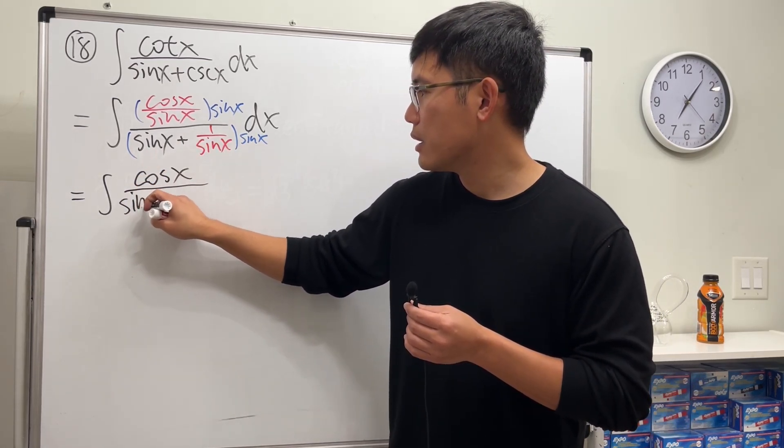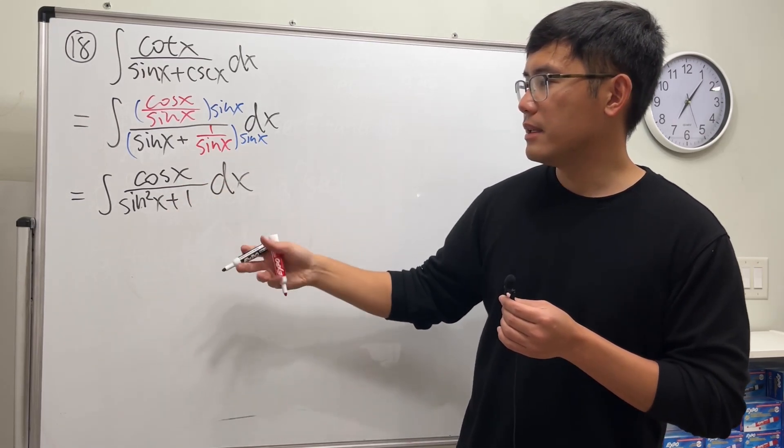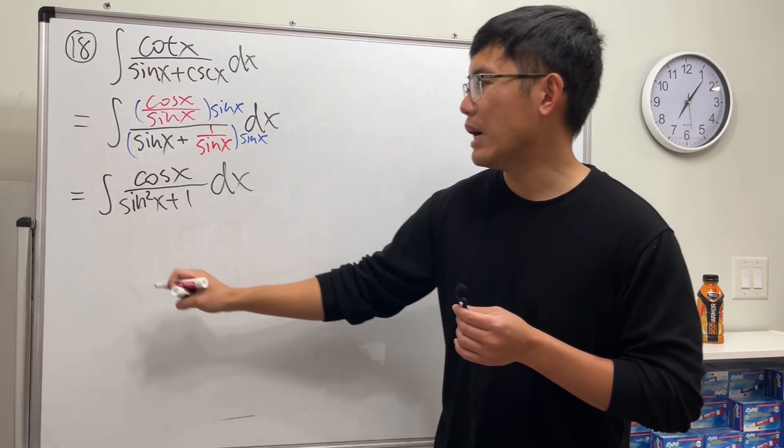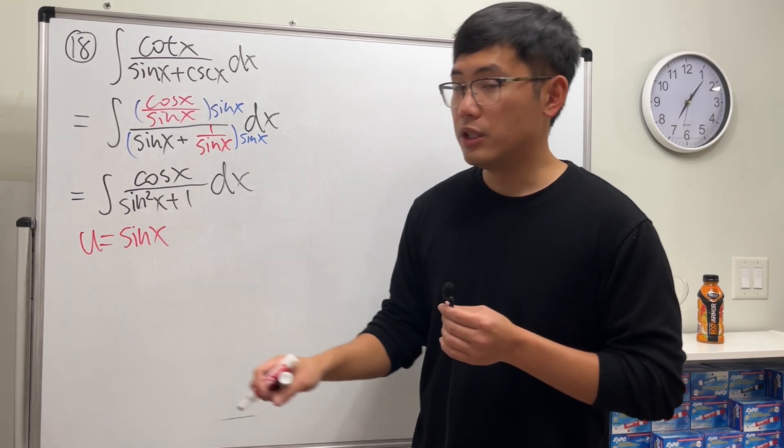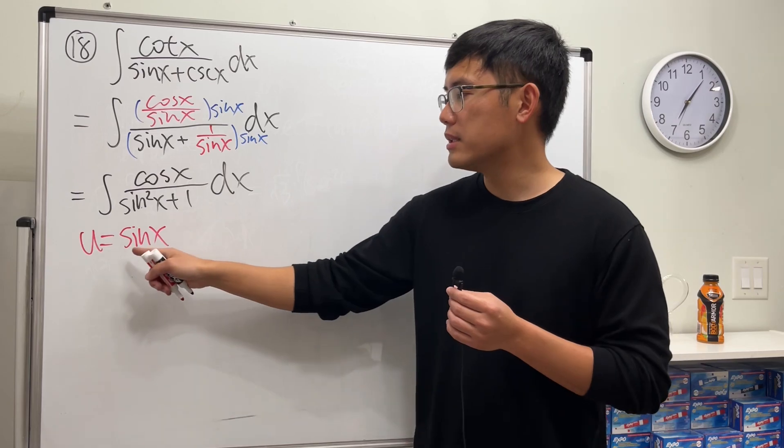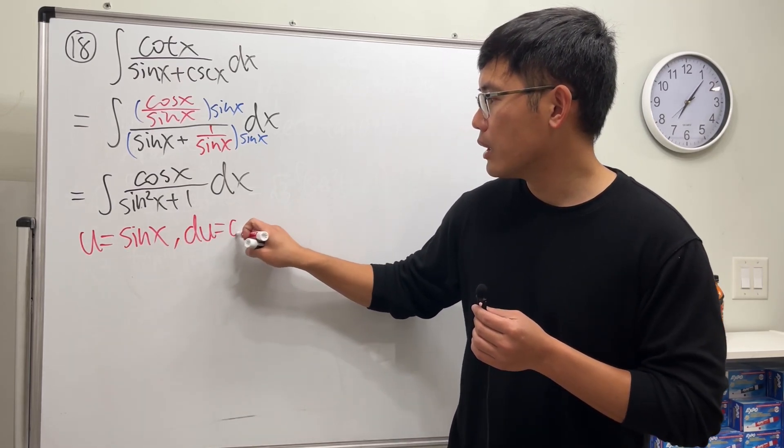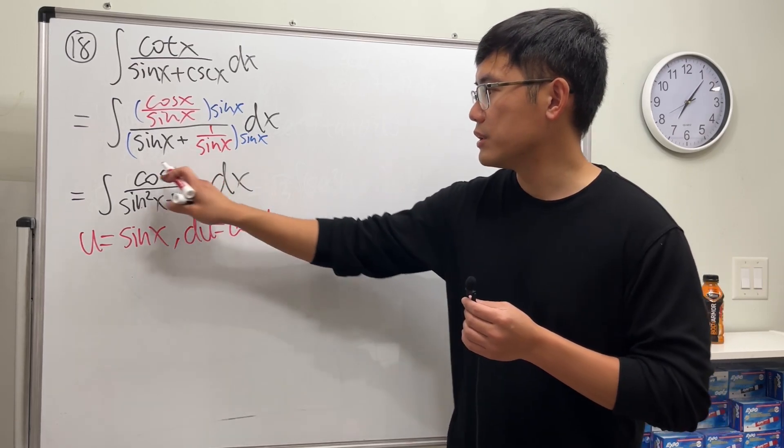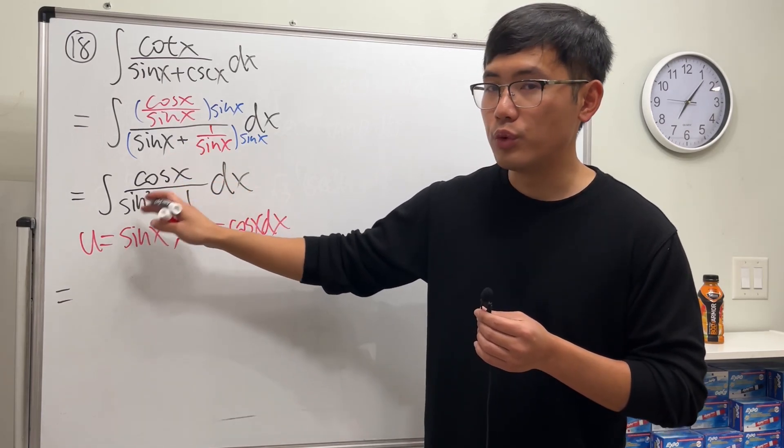Much better, because now we can just use u equals sine x. Just x, not the square though, because when we take the derivative of this we get precisely du equals cosine x dx, which is that.